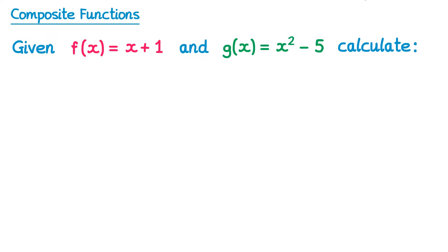Now let's try some examples. So we have two functions here, f of x and g of x, and we first of all want to find gf of x. This means we take an input x, we apply the f function to it which gets f of x, and then we take the output from that and put it into the g function.